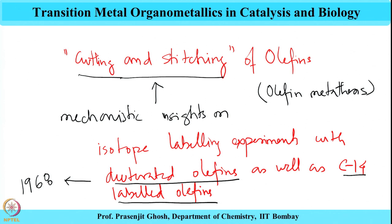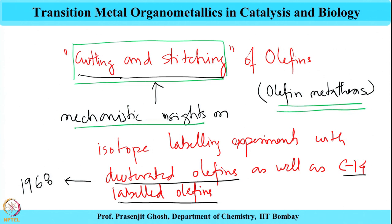Once this cutting and stitching mechanism of olefin metathesis had been established, the focus shifted to obtaining mechanistic insight into the reaction. Today we are going to take up various mechanistic hypotheses which were at that time thought to be the main pathway for performing olefin metathesis. The first mechanistic hypothesis was proposed by the researchers at Goodyear Tires in their 1968 JACS publication.